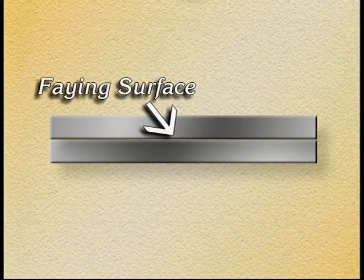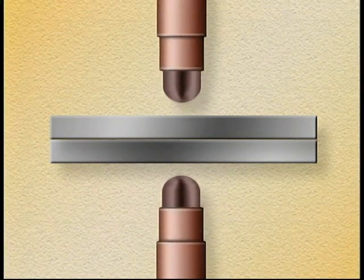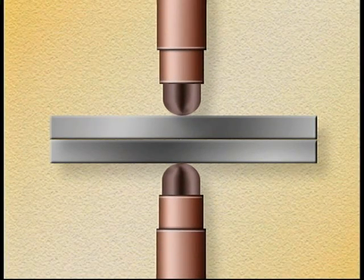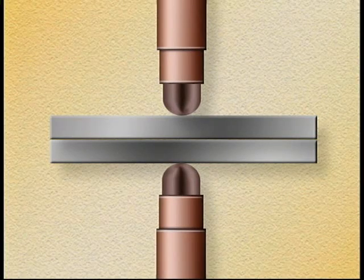The parts to be joined are placed together. Where the two parts meet is called the faying surface. This is where the weld will be formed. The two copper electrodes of the weld gun are brought together on either side of the joined parts. They press together, squeezing the parts between them with great force.